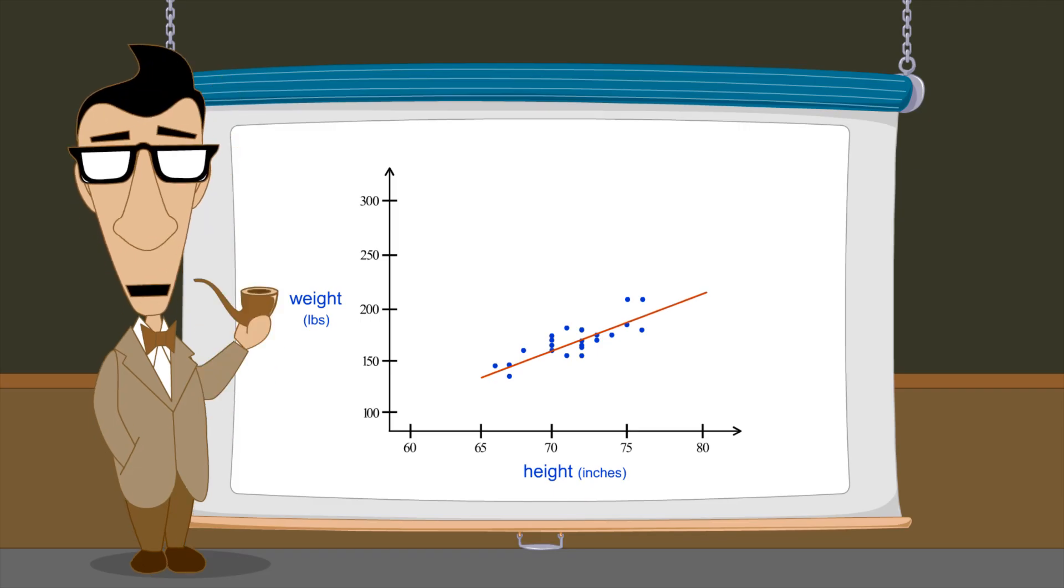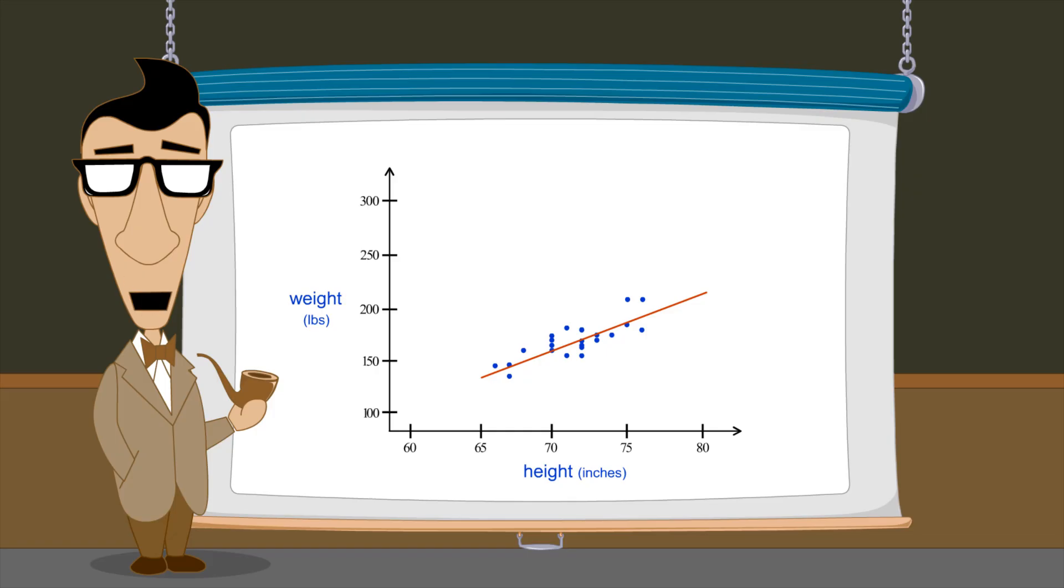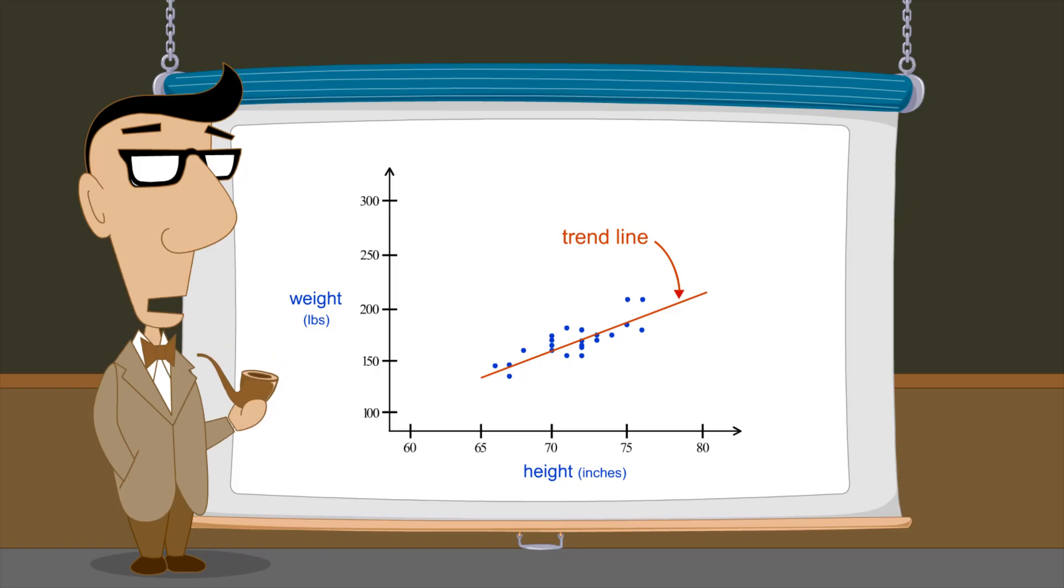We summarize this correlation between the two quantities by drawing what is called a trend line. This example illustrates what in mathematics is called a positive correlation since on the average, as a player's height increases, so does his weight.